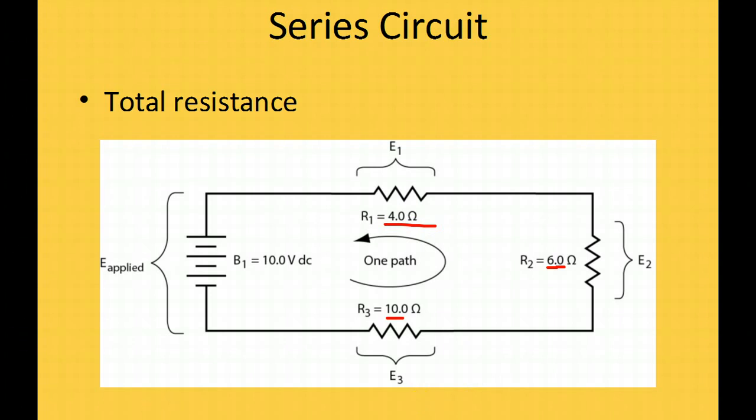And from there we can calculate what our total current would be. So 20 ohms is our total resistance, and you remember from Ohm's law, the current I equals the voltage divided by R. And so that would be 10 divided by 20, which gives you 0.5 amps of current through this entire circuit.